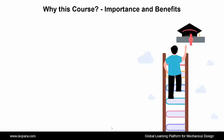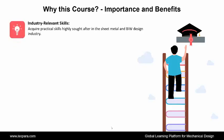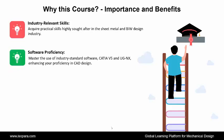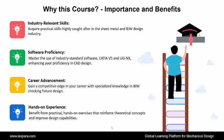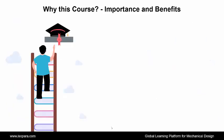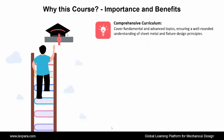Now, we see why to choose this course, its importance and benefits. First is Industry Relevant Skills — acquire practical skills highly sought after in the sheet metal and BIW design industry. Second is Software Proficiency — master the use of industry standard software, CATIA V5 and UGNX, enhancing your proficiency in CAD design. Third is Career Advancement — gain a competitive edge in your career with specialized knowledge in BIW checking fixture design. Fourth is Hands-on Experience — benefit from practical, hands-on exercises that reinforce theoretical concepts and improve design capabilities. Fifth is Comprehensive Curriculum — covering fundamental and advanced topics, ensuring a well-rounded understanding of sheet metal and fixture design principles.